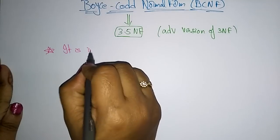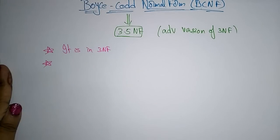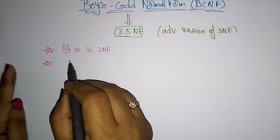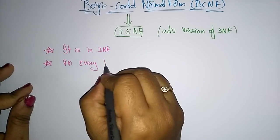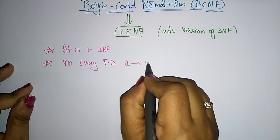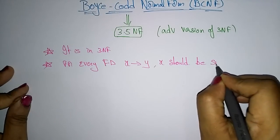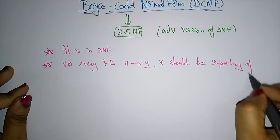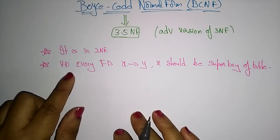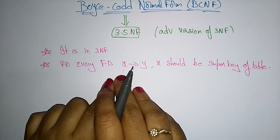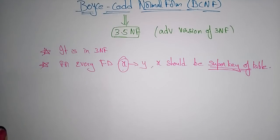The conditions to follow for BCNF: first, it should be in Third Normal Form. In 3NF, the relation should be in 2NF with no transitive dependency. But here in BCNF, it should be in 3NF, and additionally, for every functional dependency X determines Y — meaning Y is functionally dependent on X — X should be a super key of the table. You have to check whether the key attribute is a super key or not.